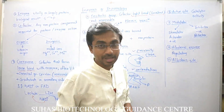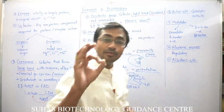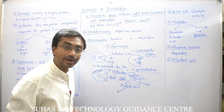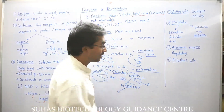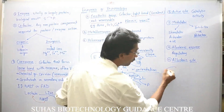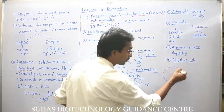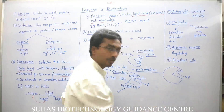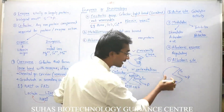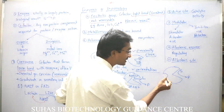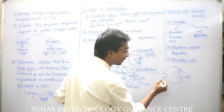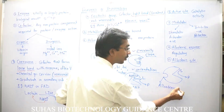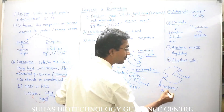Allosteric enzyme: as we have discussed, every enzyme has an active site. But there are some enzymes which, along with the active site, have an additional site. This additional site is called the allosteric or regulatory site. On this allosteric or regulatory site, either a positive modulator or a negative modulator will bind.